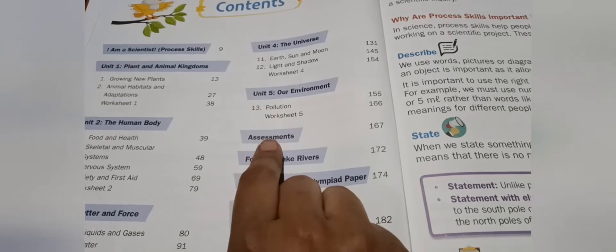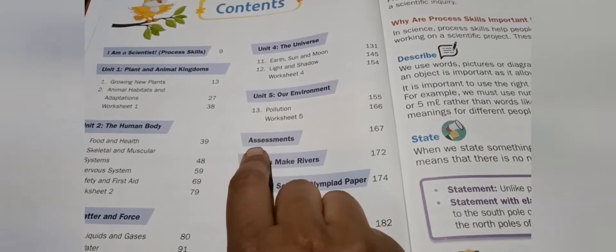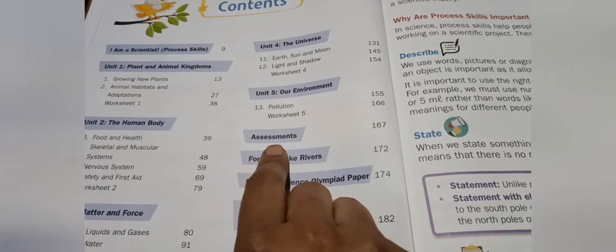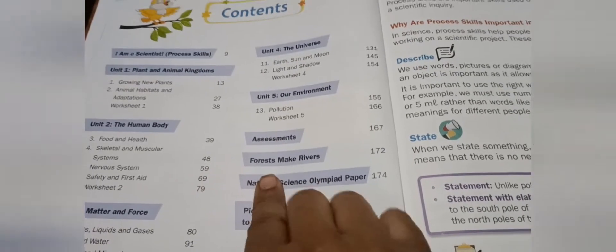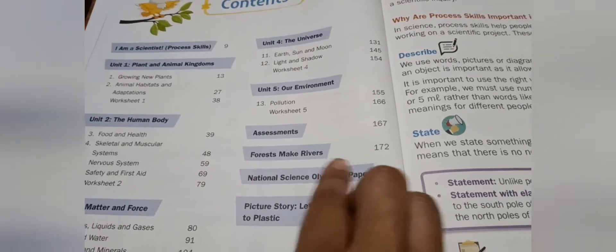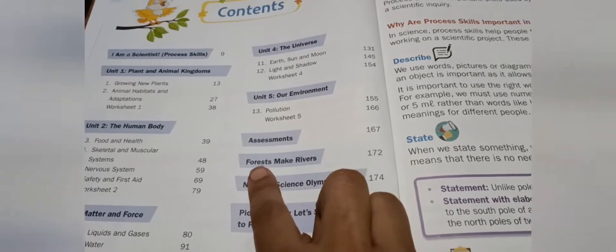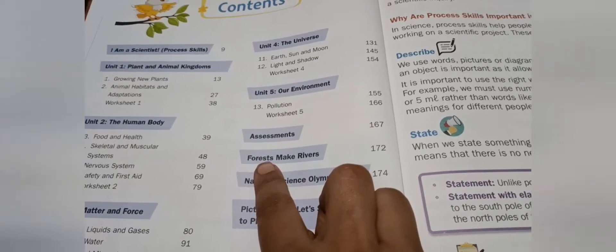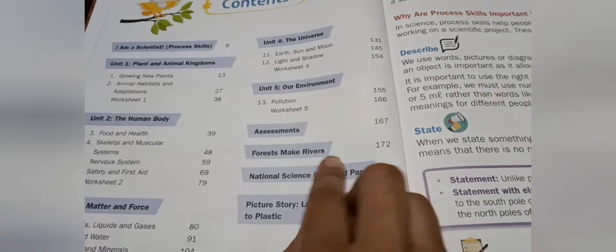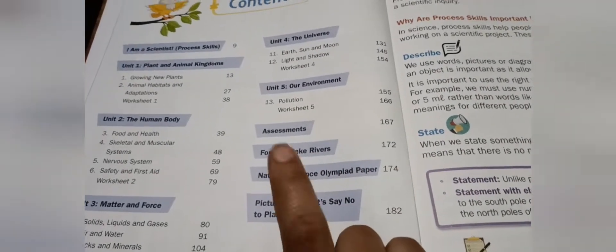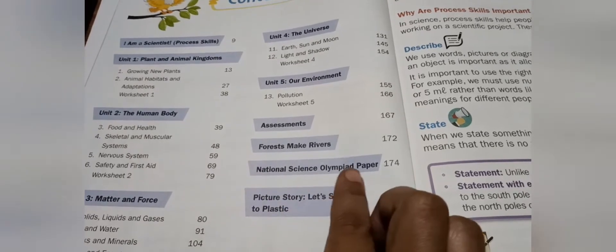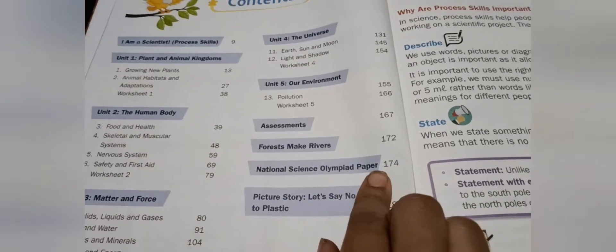In this book they have given assessment sheets so that after reading everything you can assess yourself. They have also given one unit on how forests make rivers, so you can understand that topic as well.